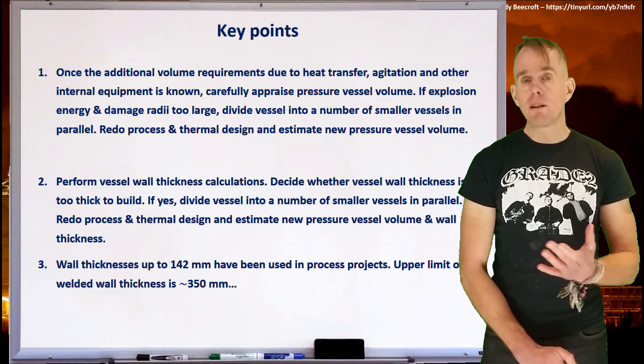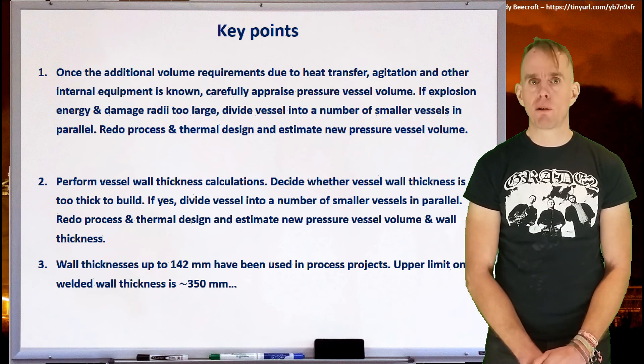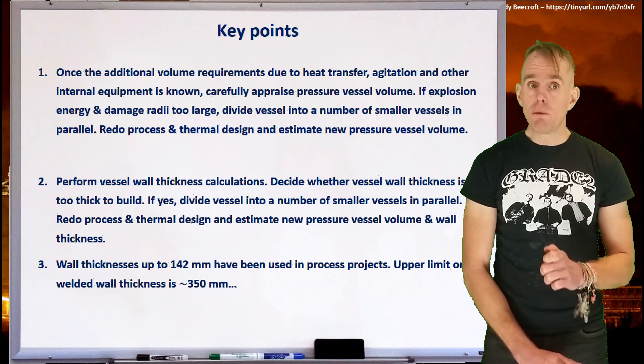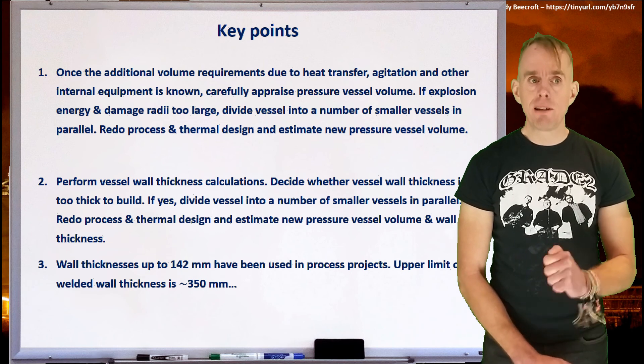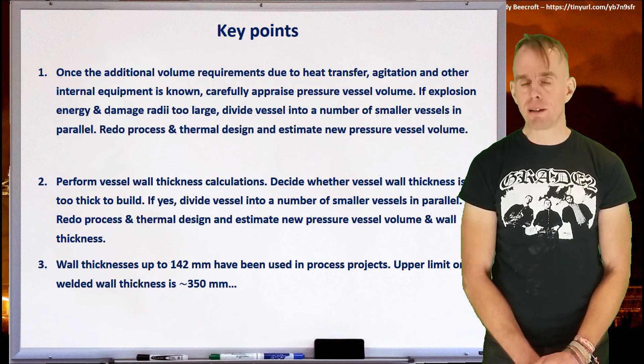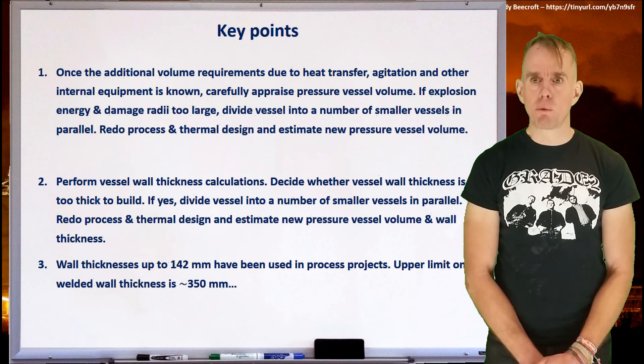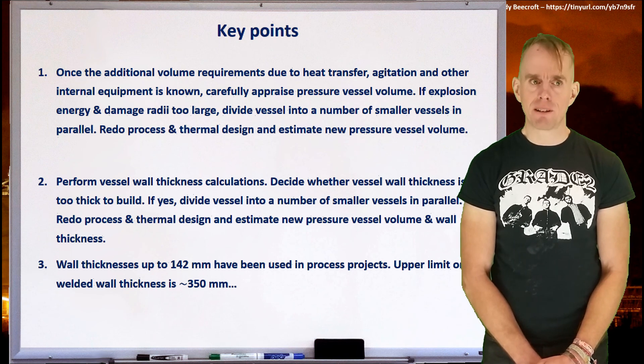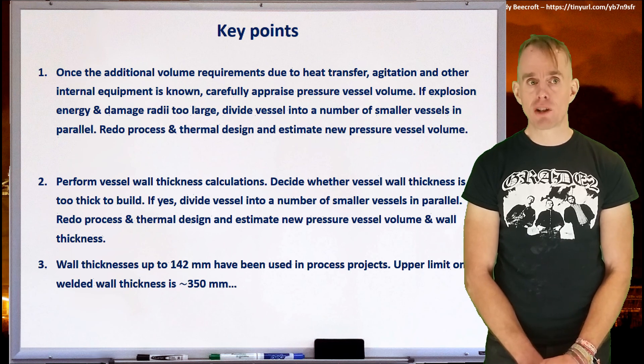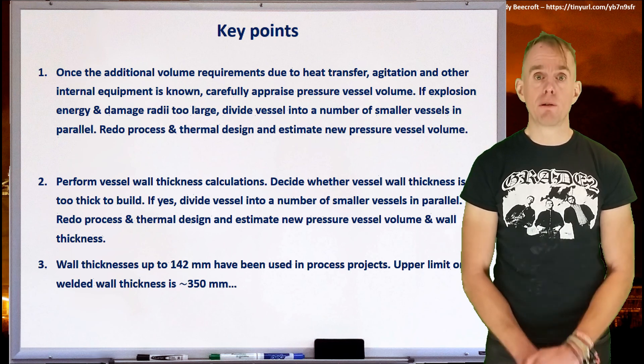So we've seen that for established process projects, wall thicknesses up to about 140 millimeters of high temperature steels have been used. For point of note, the upper limit that is technically feasible to weld is almost double that, 350 odd millimeters. Now, I would advise you never go to that thickness of wall material unless you're under expert guidance. The upper limits that I've suggested with the projects that have been out there and commissioned are probably a good enough rule of thumb for the designs that you will start to do initially.